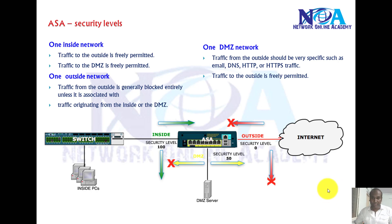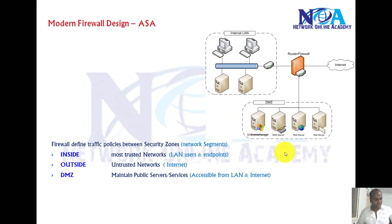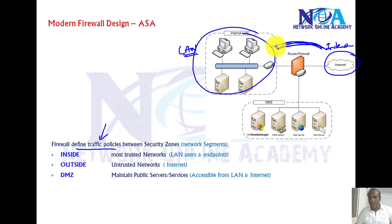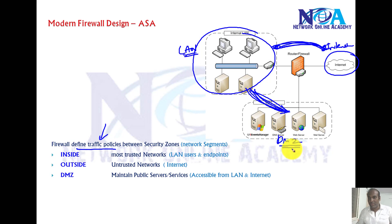Now the next thing we'll talk about is ASA security levels. Security levels decide what traffic is allowed between the interfaces in general. Most firewalls are configured with different policies between interfaces — you have some internal LAN and you want to make sure traffic going from LAN to the internet is restricted, implementing some security policy. At the same time you want to implement policy to access resources inside your DMZ where you place all your servers.